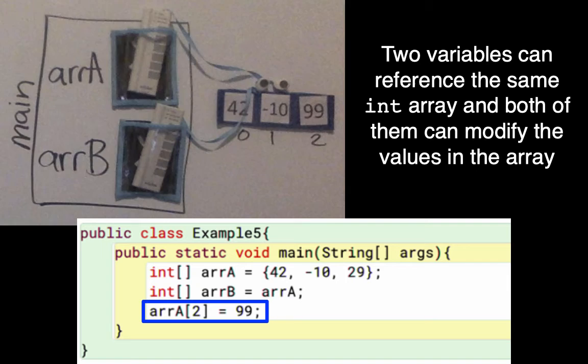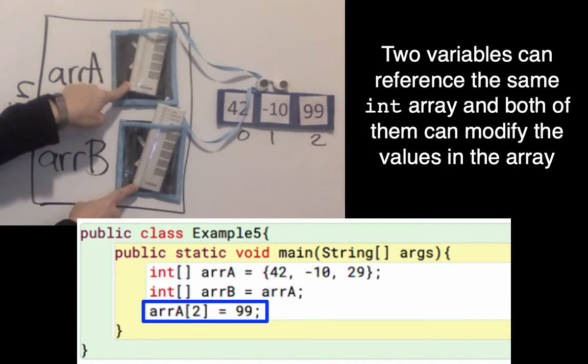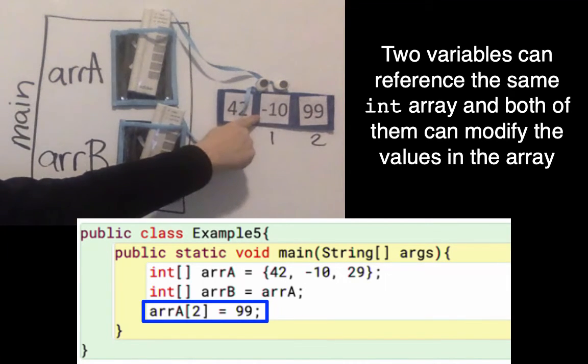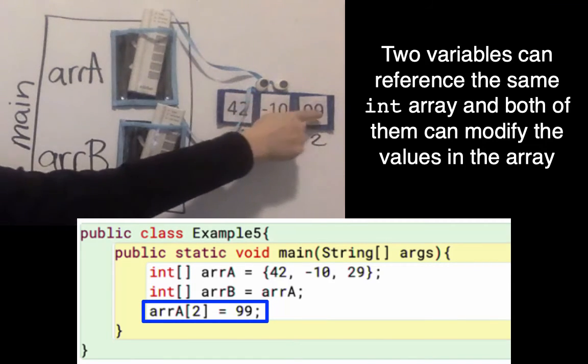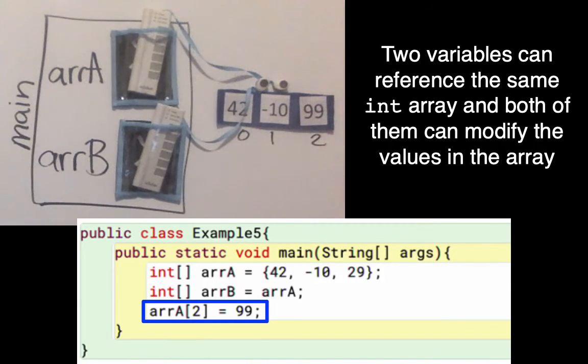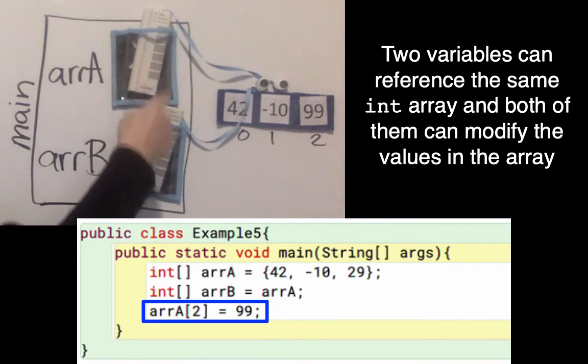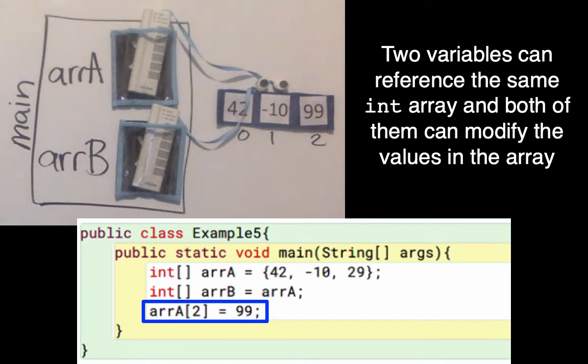Both arrA and arrB both reference that same array. I used arrA to change that last element to a 99. But I similarly could have used arrB - either one of these remote controls or either one of these variables or either one of these references could be used to change the elements in that array.